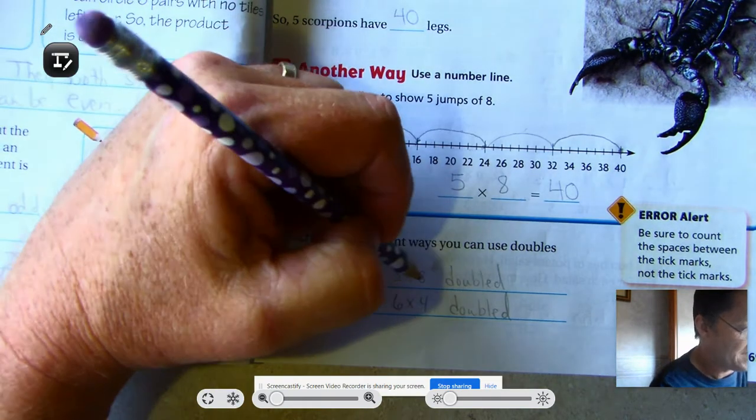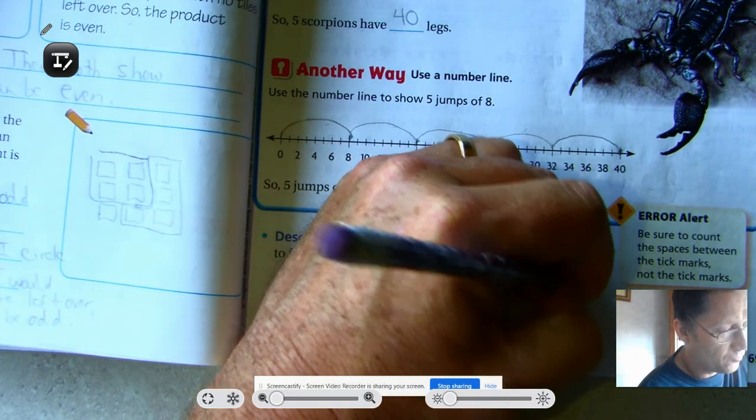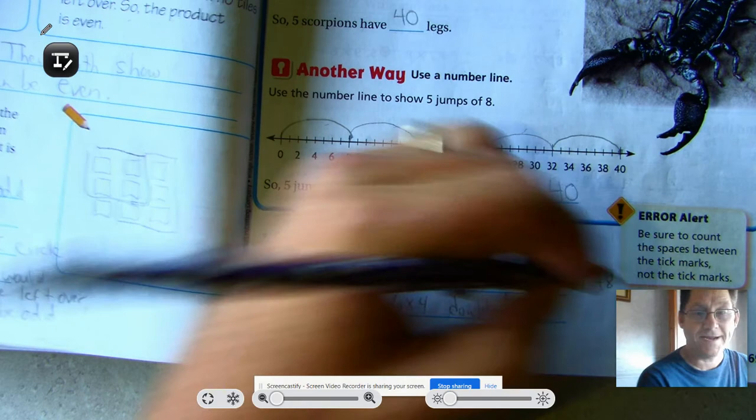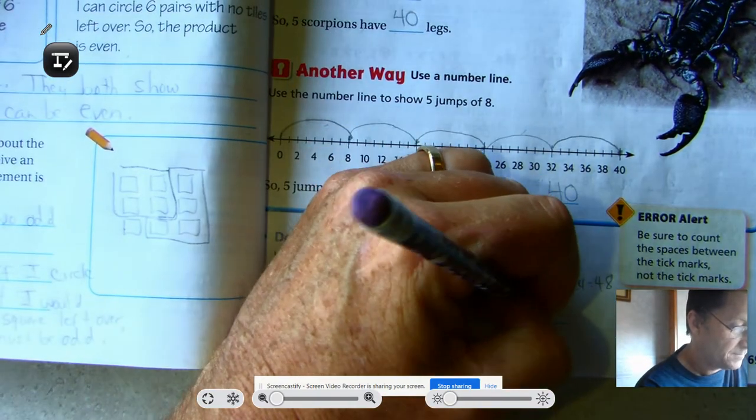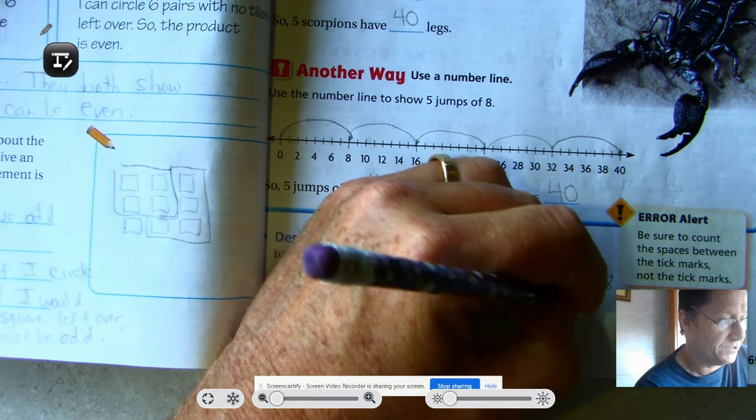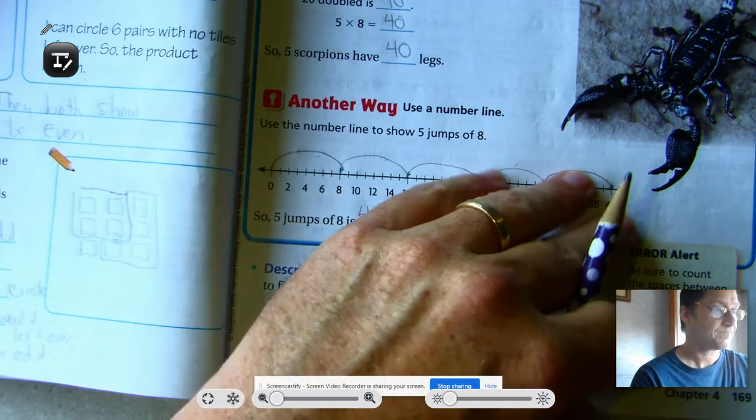Either way would help us solve that problem. So 3 times 8 is 24. 24 plus 24, 48. 6 times 4 is 24. And we just said 24 plus 24 is 48.